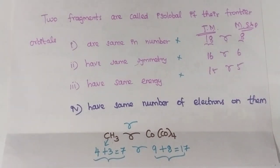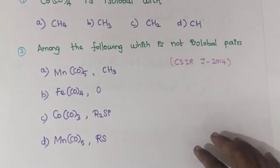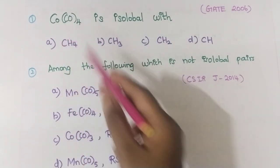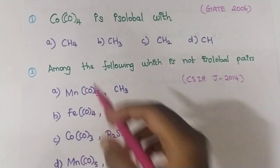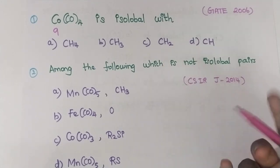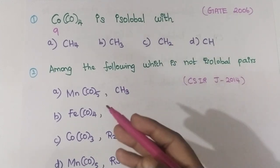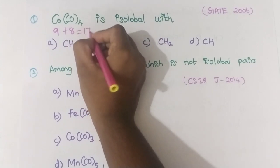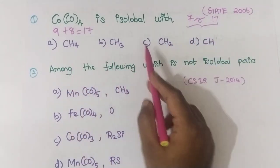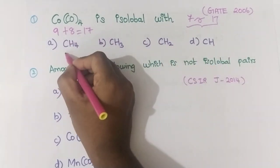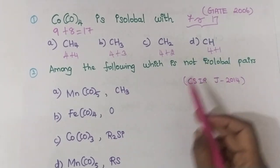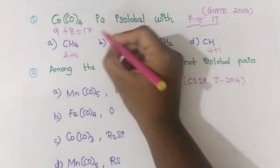Let's solve the first example. For Co(CO)₄: cobalt has 9 valence electrons and four carbonyls donate 8 electrons, giving 17 total. Since 17 is isolobal with 7, we count electrons among the options. CH₄ gives 4+4=8, CH₃ gives 4+3=7, CH₂ gives 4+2=6, CH gives 4+1=5. The option giving 7 electrons is CH₃, so Co(CO)₄ is isolobal with the methyl group CH₃.